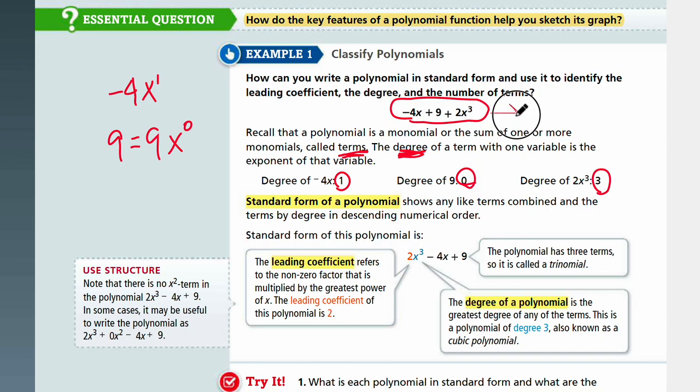So the standard form of a polynomial looks like different terms combined, and it is ordered from descending numerical order with the degree. So if you were to rearrange this, you would have to write the biggest degree first. So the term with the biggest degree would be 2x cubed, and then the next biggest would be minus 4x, and then the last plus 1 is plus 9. So this is the standard form.